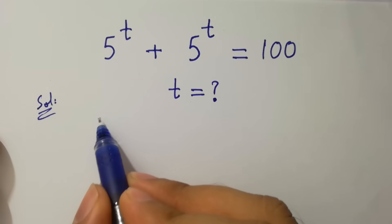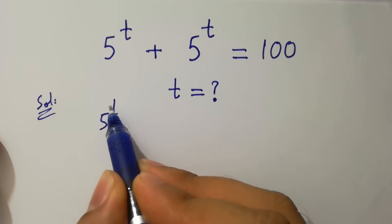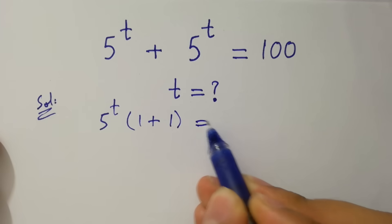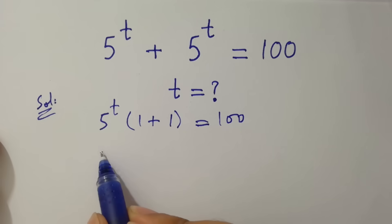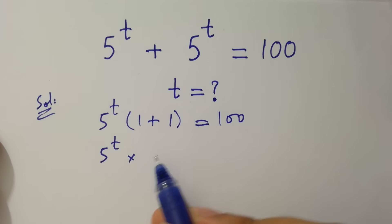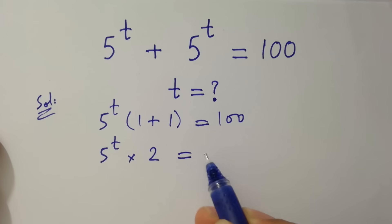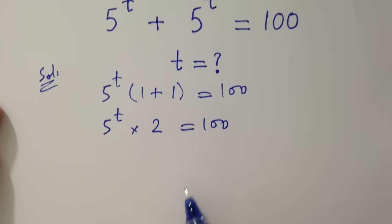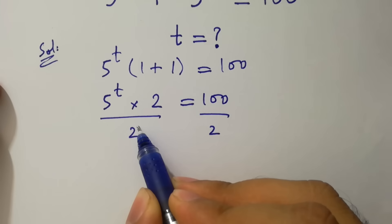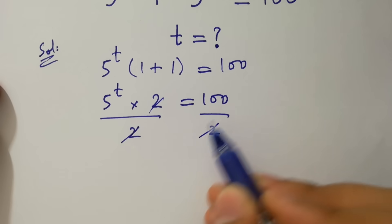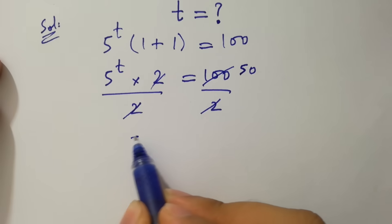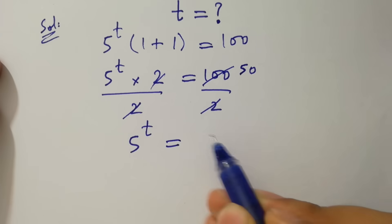We can factor out 5 to the power t. We have 5 to the power t times 1 plus 1, which is 5 to the power t times 2, equal to 100. Divide by 2 on both sides — 2 and 2 cancel, giving 5 to the power t equal to 50.